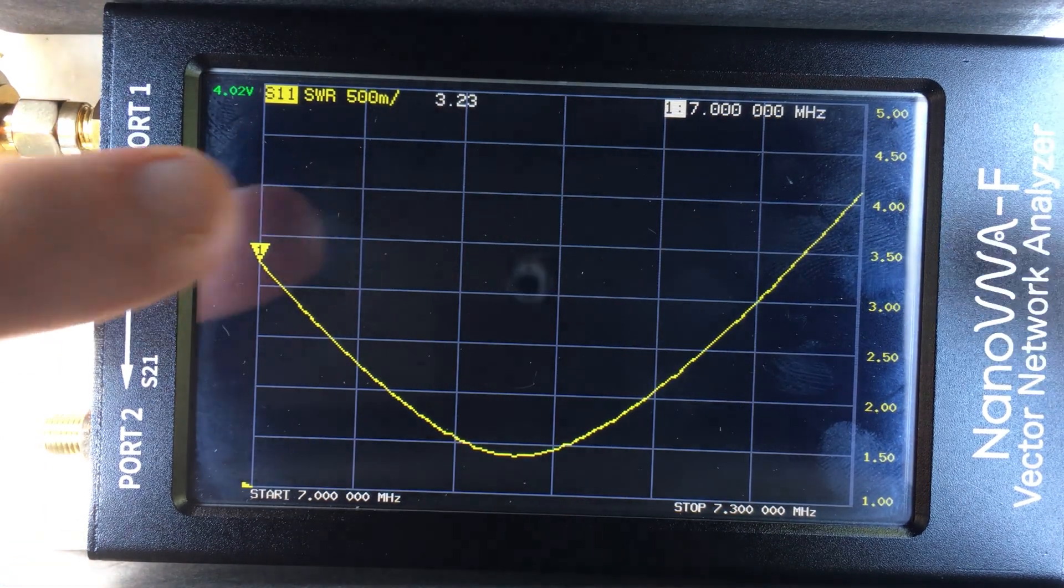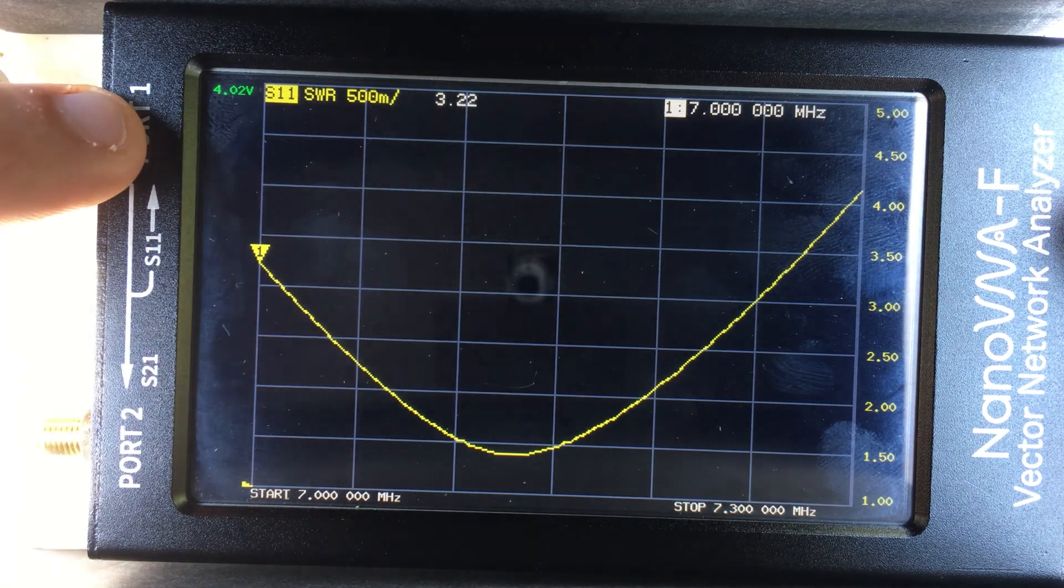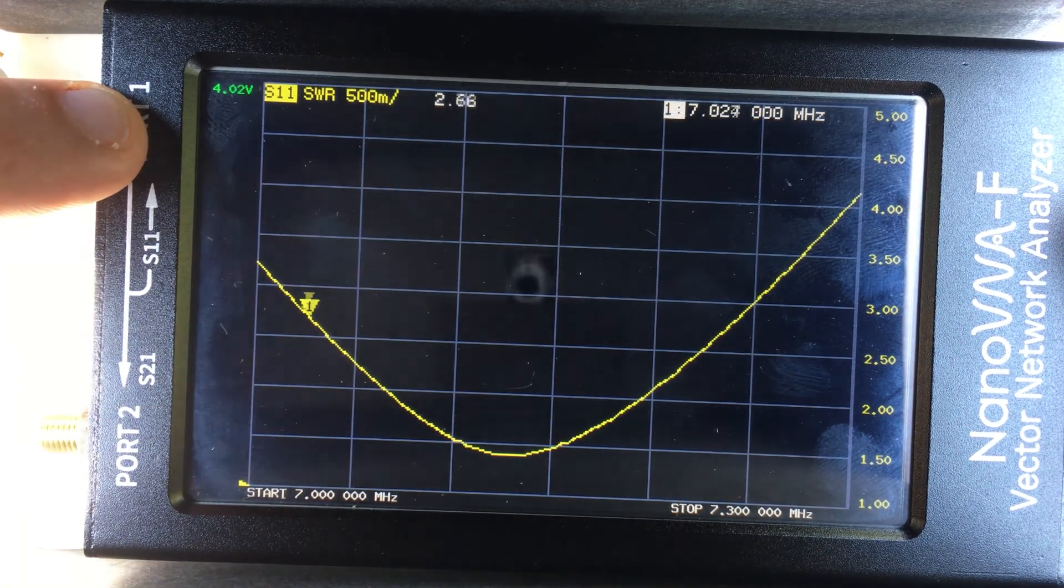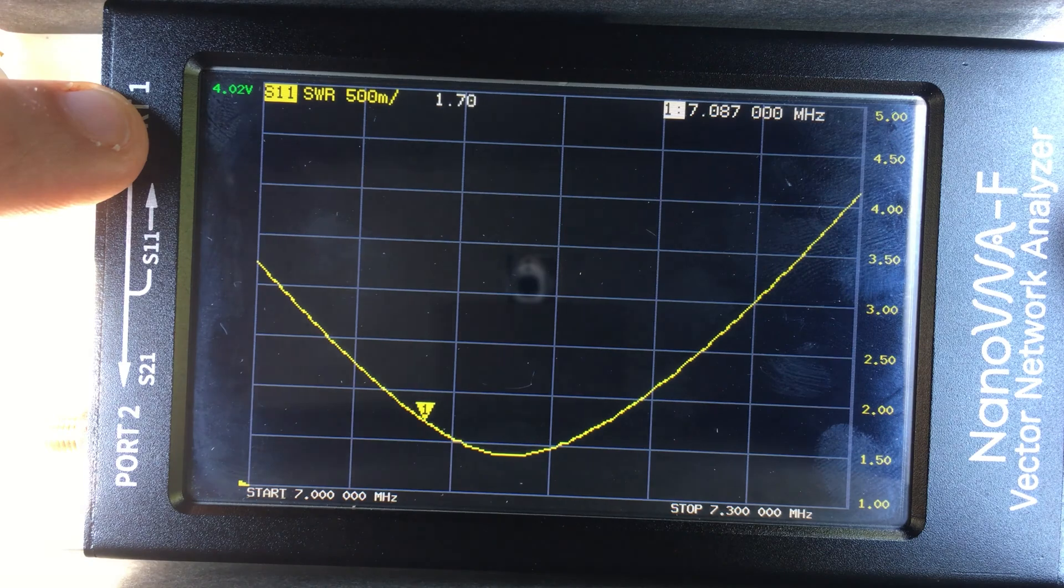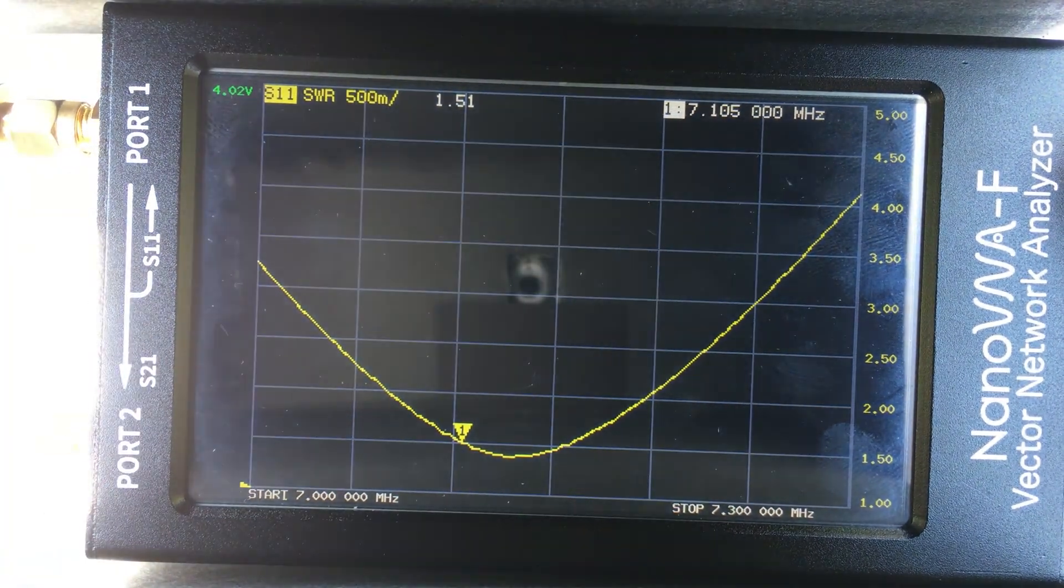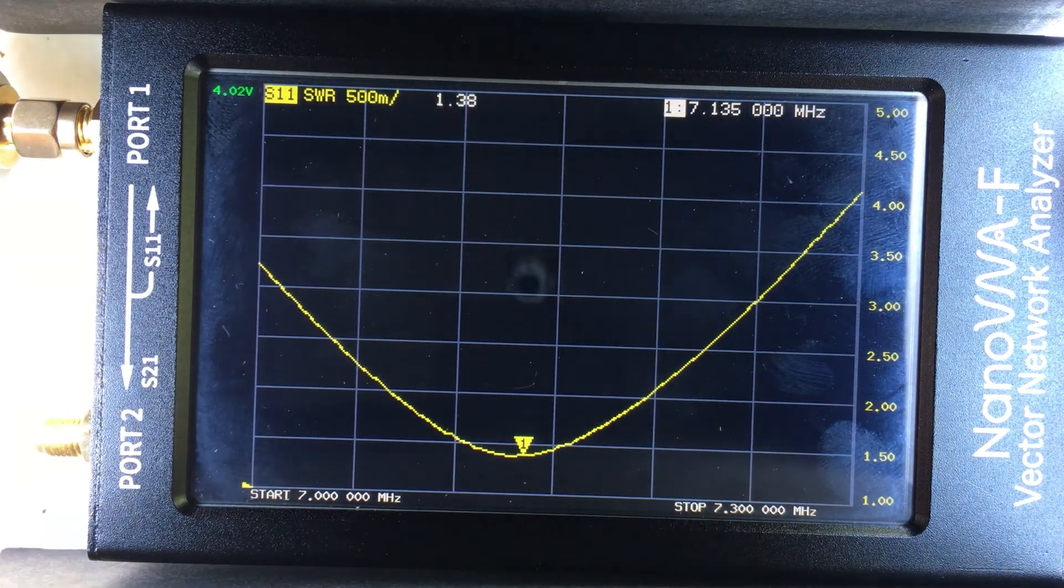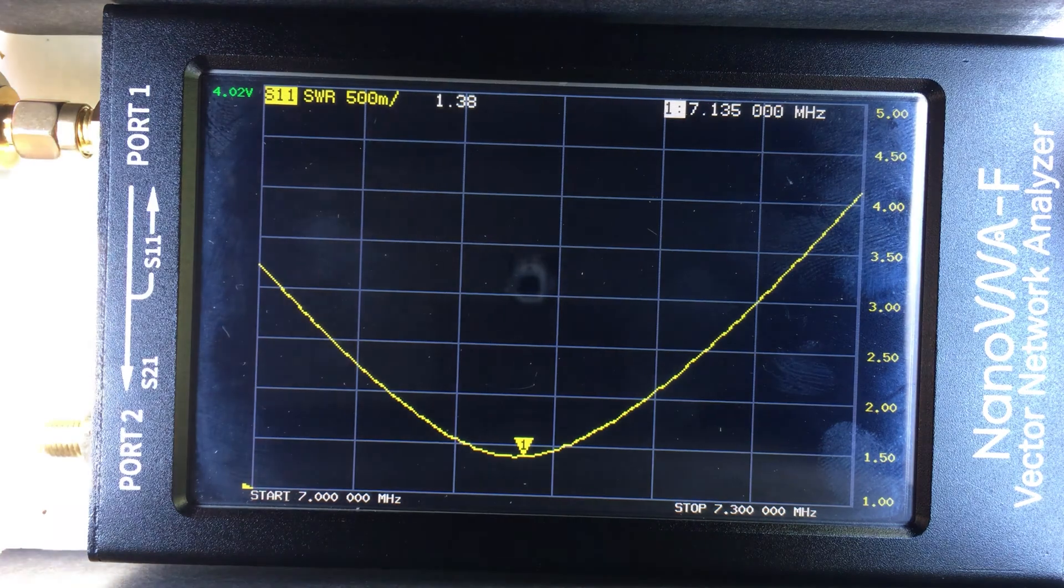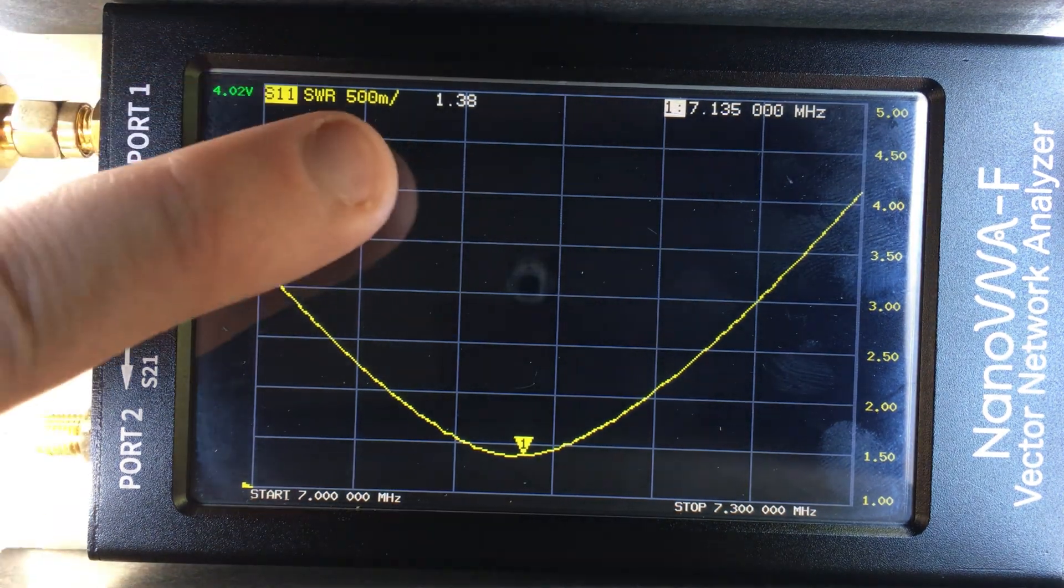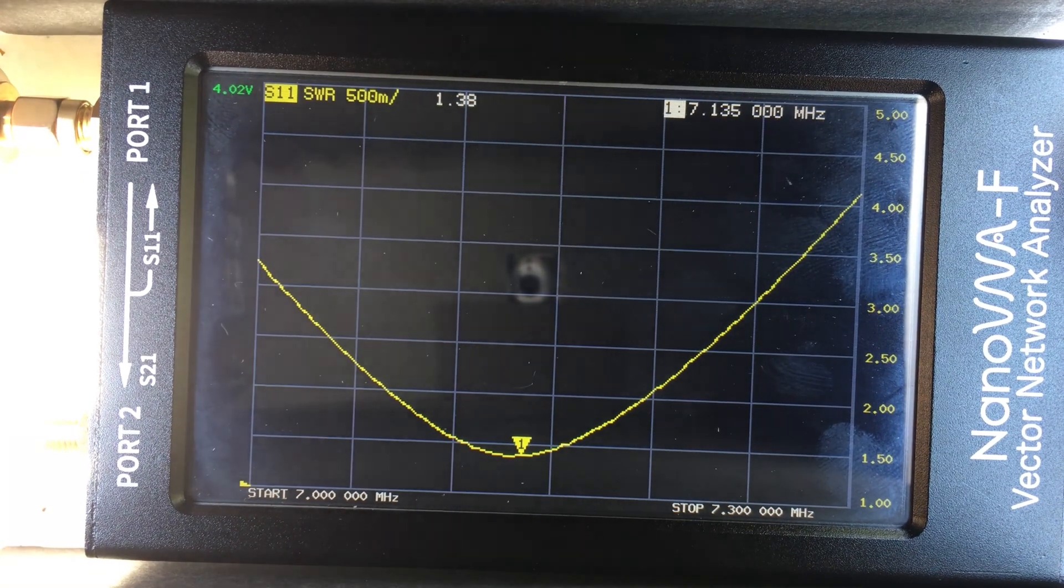All right. That's what I was looking for here. So now I can see at 7 megahertz, my SWR is 3.2 ish or so. And if I scroll down, I can see that it bottoms out right here at around 7.135 megahertz and at a 1.38 SWR. So I'm very happy with that.